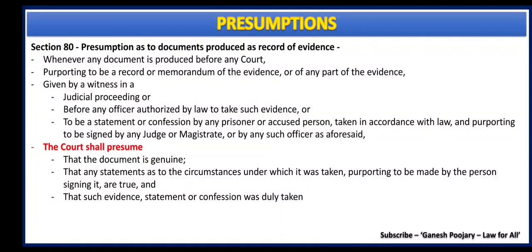Section 80 discusses about presumption as to documents produced as record of evidence. Here, a particular document is produced to the court as evidence by a particular witness, prisoner, or accused person. This document is produced in a judicial proceeding before any officer authorized by law to take such evidence, and the same is taken in accordance with law, and the document is signed by a judge or magistrate. If the same is referred in another case, the court shall presume that the document is genuine, that any statement as to circumstances under which it was taken purporting to be made by the person signing it are true, and that such evidence, statement, or confession was duly taken.